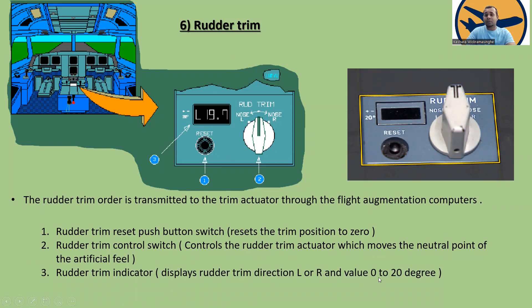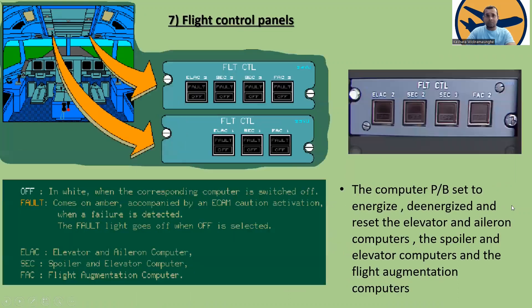The rudder trim indicator displays rudder trim direction — left or right — and value from 0 to 20 degrees. The flight control panels are situated in the overhead panel.